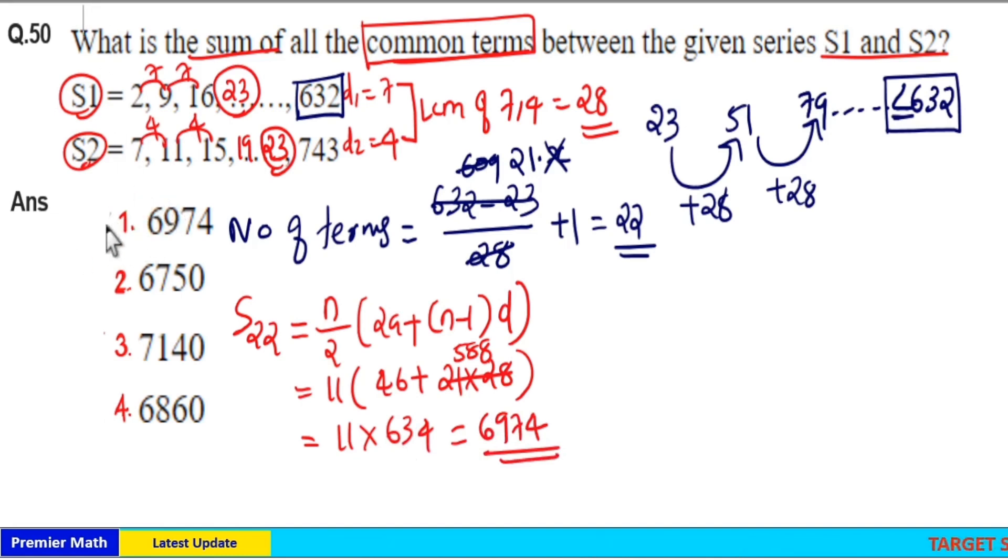Option 1 is your answer. Now if you don't know this formula, here the first term is 23. Now 51 means 23 plus 28, and 79 means 23 plus 28 plus 28. That is, 23 is repeated total 22 times. So sum of 22 terms equals 23 repeated total 22 times.